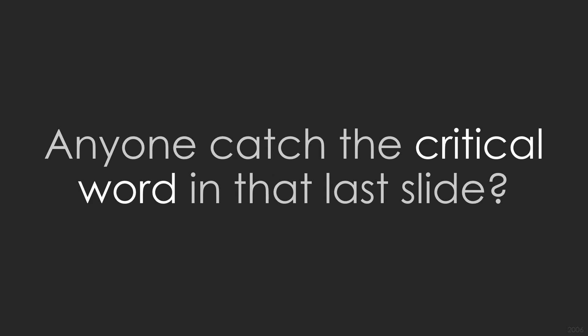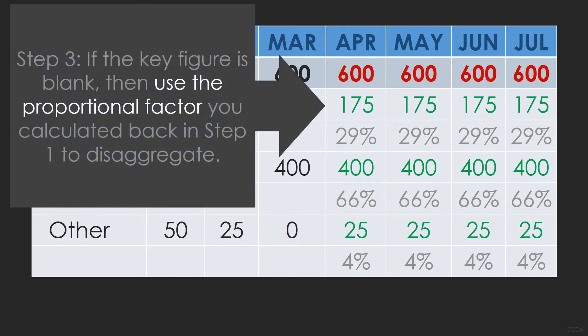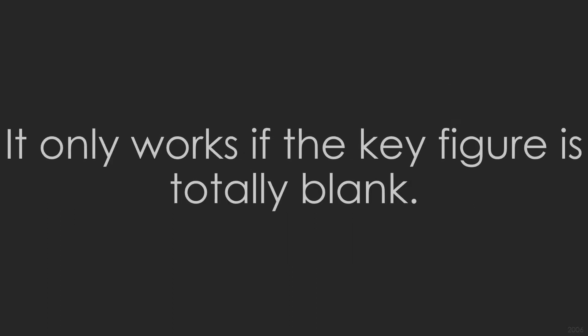Anyone catch the critical word in that last slide? Here it is again. Step three: if the key figure is blank, then use the proportional factor you calculated back in step one to disaggregate. It's 'if.' Calculating a proportional factor and storing it somewhere has one big problem — it only works if the key figure is totally blank.